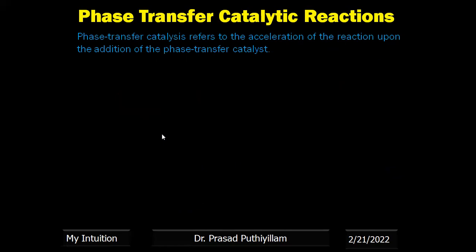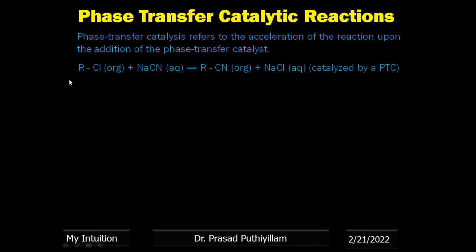PTC refers to the acceleration of a reaction upon addition of a phase transfer catalyst. For example, alkyl chloride or alkyl halides (organic phase) react with sodium cyanide (aqueous phase). This reaction can be done in the presence of a phase transfer catalyst to get RCN (organic) and NaCl (aqueous). Since one product is in organic phase and the other in aqueous phase, separation is also easy. Without a phase transfer catalyst, this reaction is not easy because the reagents are in different phases. Therefore, the reaction proceeds easily with PTC, and product separation is straightforward.